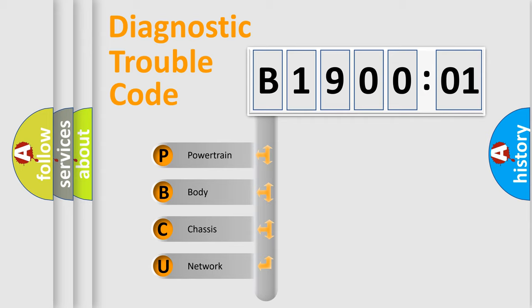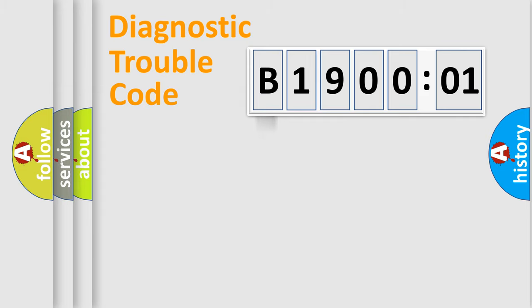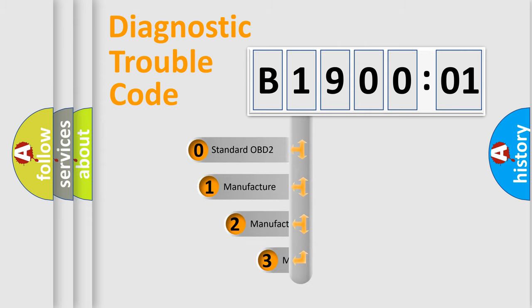We divide the electric system of an automobile into four basic units: powertrain, body, chassis, and network. This distribution is defined in the first character code.